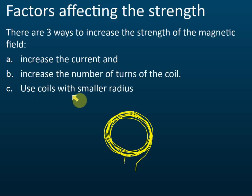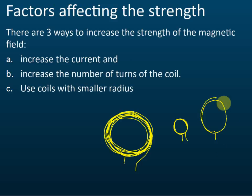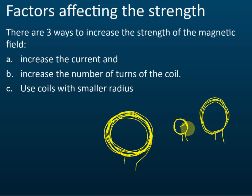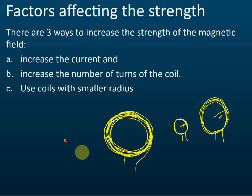The third factor is to use a coil with a smaller radius. For example, compare a small coil with a large one — if the number of turns is the same, the one with the smaller radius produces a stronger field. The radius is the distance from the center to the side. So these are the three factors that affect the strength of the magnetic field of a flat coil.